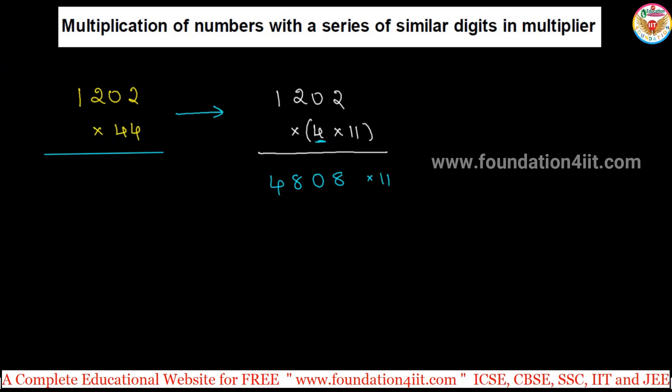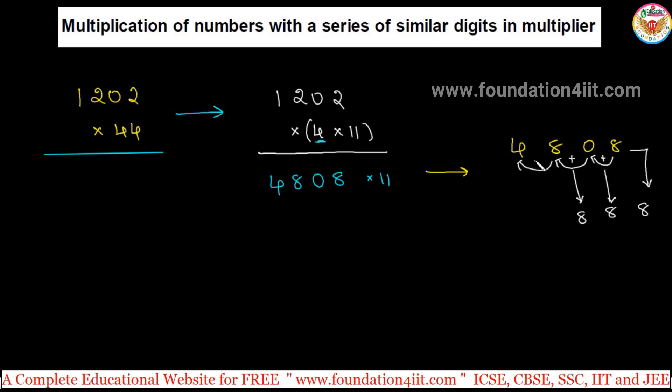According to the previous technique, that is 4808 multiplication with 11 - the method we already studied in previous session. First, units place as it is, then by adding units and next place: 8 plus 0 is 8, 0 plus 8 again is 8.